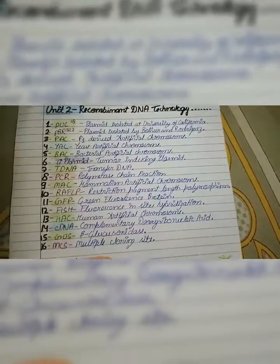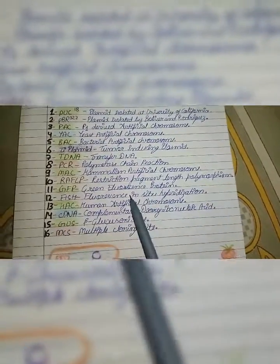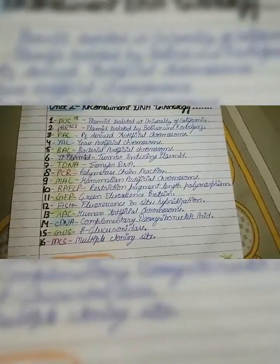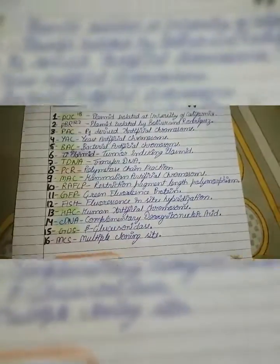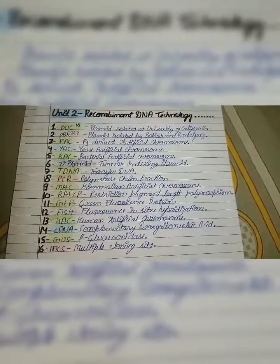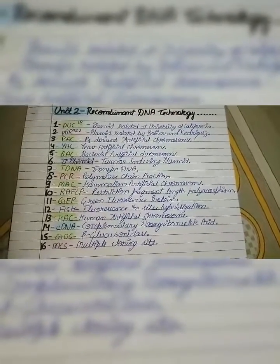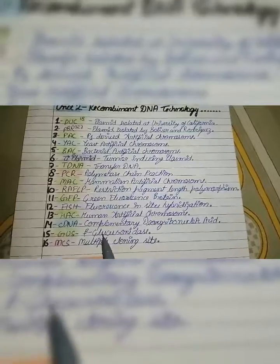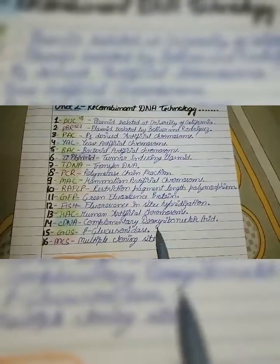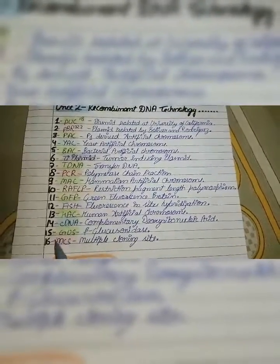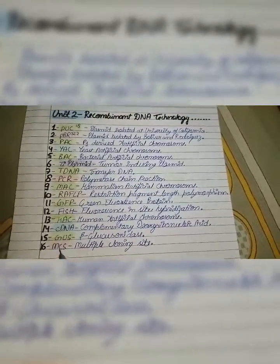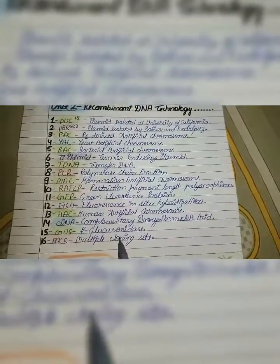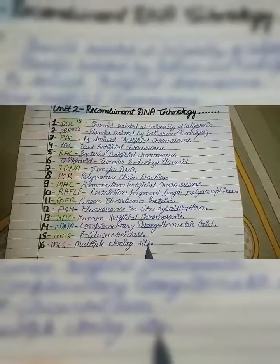HAC stands for Human Artificial Chromosome. cDNA stands for Complementary Deoxyribonucleic Acid. GUS stands for Beta Glucosinidase. MCS stands for Multiple Cloning Sites.